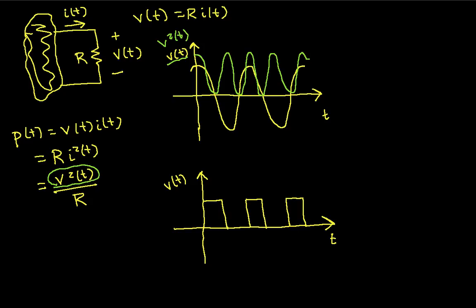If I'm looking at a square wave like I've drawn here, then when I square it I get something where, when it's non-zero, it's equal to the magnitude squared of the wave, and when it's zero, it's still zero. So we can square the instantaneous voltage, or we can do the same thing with the instantaneous current.